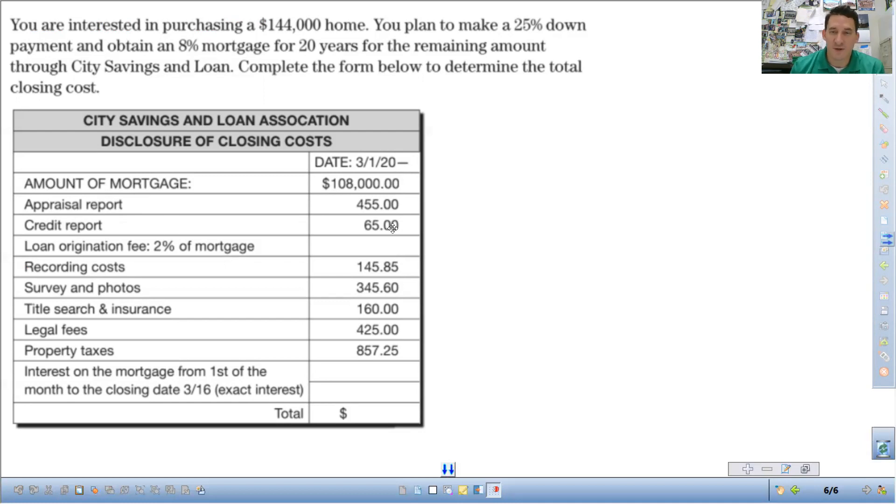The credit report. So the credit report that is just run in. The lenders have to run a credit report on you. That's the credit score, that sort of thing. Loan origination fee, 2% of mortgage. So this is how the lenders make their money. They take a percentage of the mortgage. So let's go ahead and calculate that.